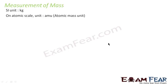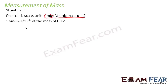The SI unit for measuring mass is kilogram, but on atomic scale — that is, on a very small scale to measure mass of very light things — we use another unit called atomic mass unit, generally written as amu. Now 1 amu is defined as 1/12 the mass of carbon-12, which is an isotope of carbon atom with mass number 12.